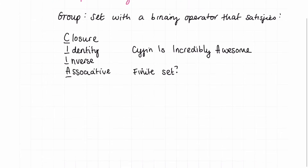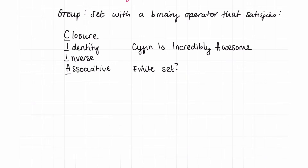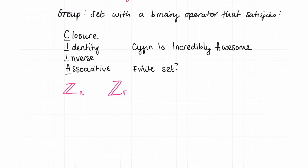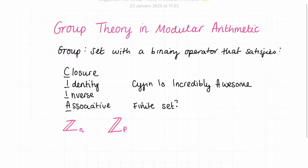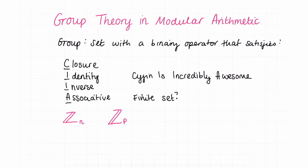I'm going to use a little symbol throughout this lesson. The set of integers can be denoted with a big fancy capital Z. We can say that this set of integers is modulo n by using a subscript n. If the modulus is prime, we denote it with Z subscript P for prime. When we are trying to find out whether a set with a binary operator is a group in modular arithmetic, things work a little bit differently, particularly when considering the inverse.